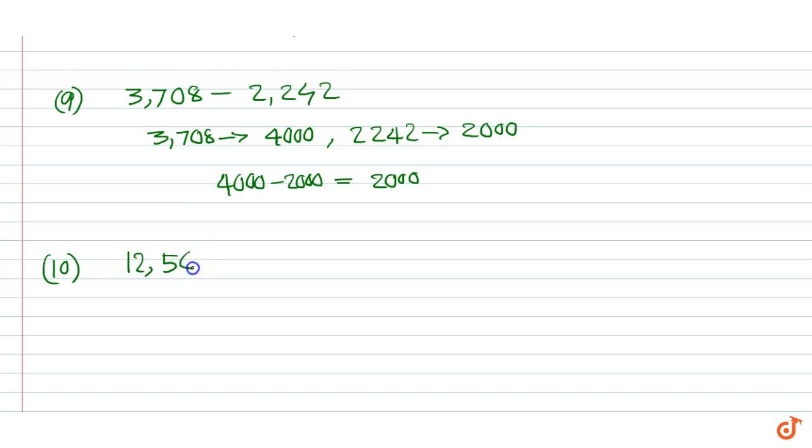Example 10: 12507 plus 11271. 12507 rounds up to 13000, 11271 rounds up to 11000. So 13000 plus 11000 equal to 24000.